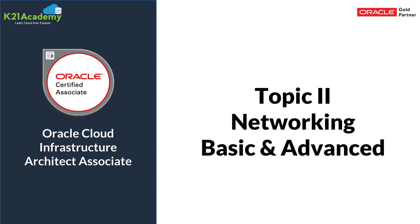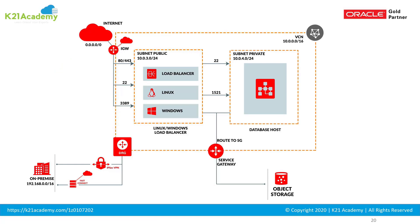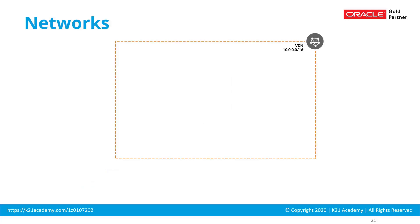Now let's look at the second topic: networking, covering both basic and advanced. This is a network diagram, and if you're coming from no networking background it might sound a little cryptic initially, but it's totally doable and easy to understand. You need to learn what is a virtual cloud network or VCN. These networks are typically broken down into smaller networks called subnets, in which you create your resources like virtual machines or databases.